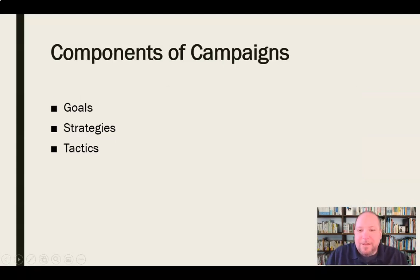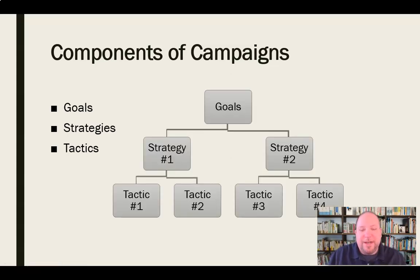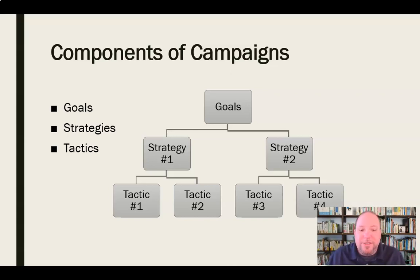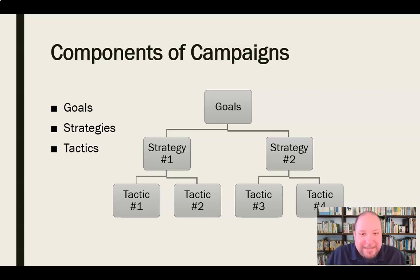The components of a campaign are pretty straightforward: they have goals, strategies, and tactics, arranged in a hierarchical structure. You start with the goals — what are we trying to achieve? Then you develop strategies around how we're going to get to those goals. The tactics are then how we're going to accomplish those strategies. We use specific tactics to enact strategies, which then lead us to our goals.